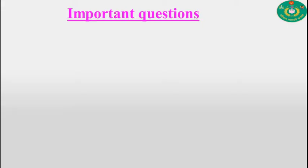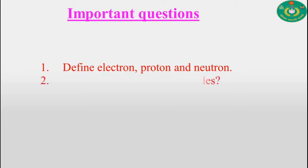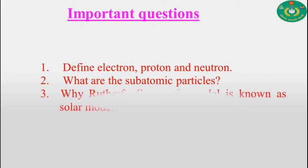After completing this lesson, cadets, you will be able to solve some important questions. The first one: define electron, proton and neutron. The second one: what are the subatomic particles? And the third one: why is Rutherford's atomic model known as solar model?